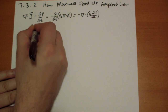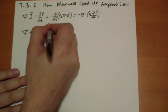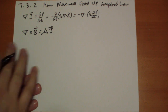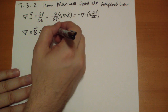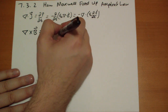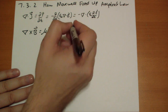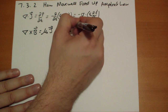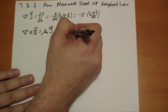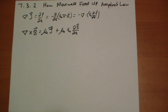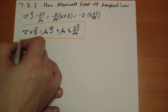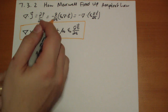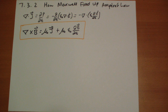The curl of B is equal to mu naught J vector, and when we take the divergence of this we want everything to be zero, so we have to introduce plus mu naught epsilon naught times the change in the E vector over time. This is our new Ampere's Law — this is the patch to Ampere's Law that makes it so that the divergence of the curl of B is always equal to zero.